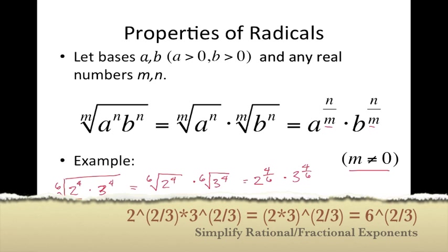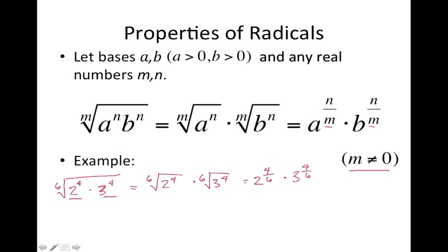If we want to try one more example, we can have the 10th root of 5 to the 2nd power times 7 to the 2nd power. So I can split these two apart. So I have the 10th root of 5 squared times the 10th root of 7 squared. And so now I can deal with each of these individually.